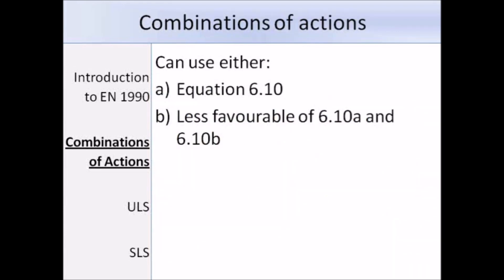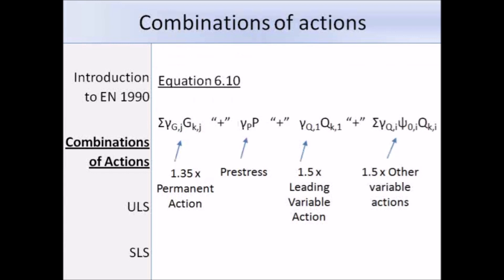When we need to consider combinations of actions, there are two options. The first option is to use equation 6.10. Alternatively, we can use the less favourable result of equations 6.10a and 6.10b. Here we have the first option, equation 6.10: we have the permanent load factor γG times the permanent action GK, plus the pre-stress, plus the leading variable action times the partial factor γQ, plus any other variable actions times γQ times the combination factor ψ0. The leading variable action is the one which creates the most unfavourable effect, but when it's not obvious we need to consider each variable in turn. Note that partial factors are 1.35 for permanent actions and 1.5 for variable actions — compared to 1.4 and 1.6 under British Standards.